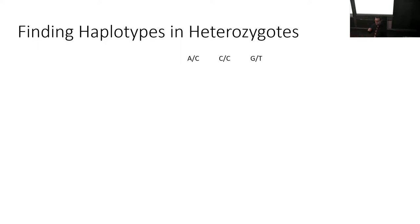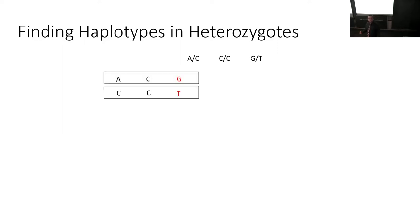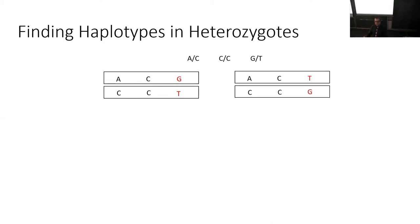Imagine three variants across a region: AC, CC is a homozygous variant, and a GT variant. We could choose two haplotypes — ACG and CCT — but that's one option. The other option would be what we call another phase: ACT and CCG. This problem just gets harder and harder as you add more variants, with many, many possibilities.